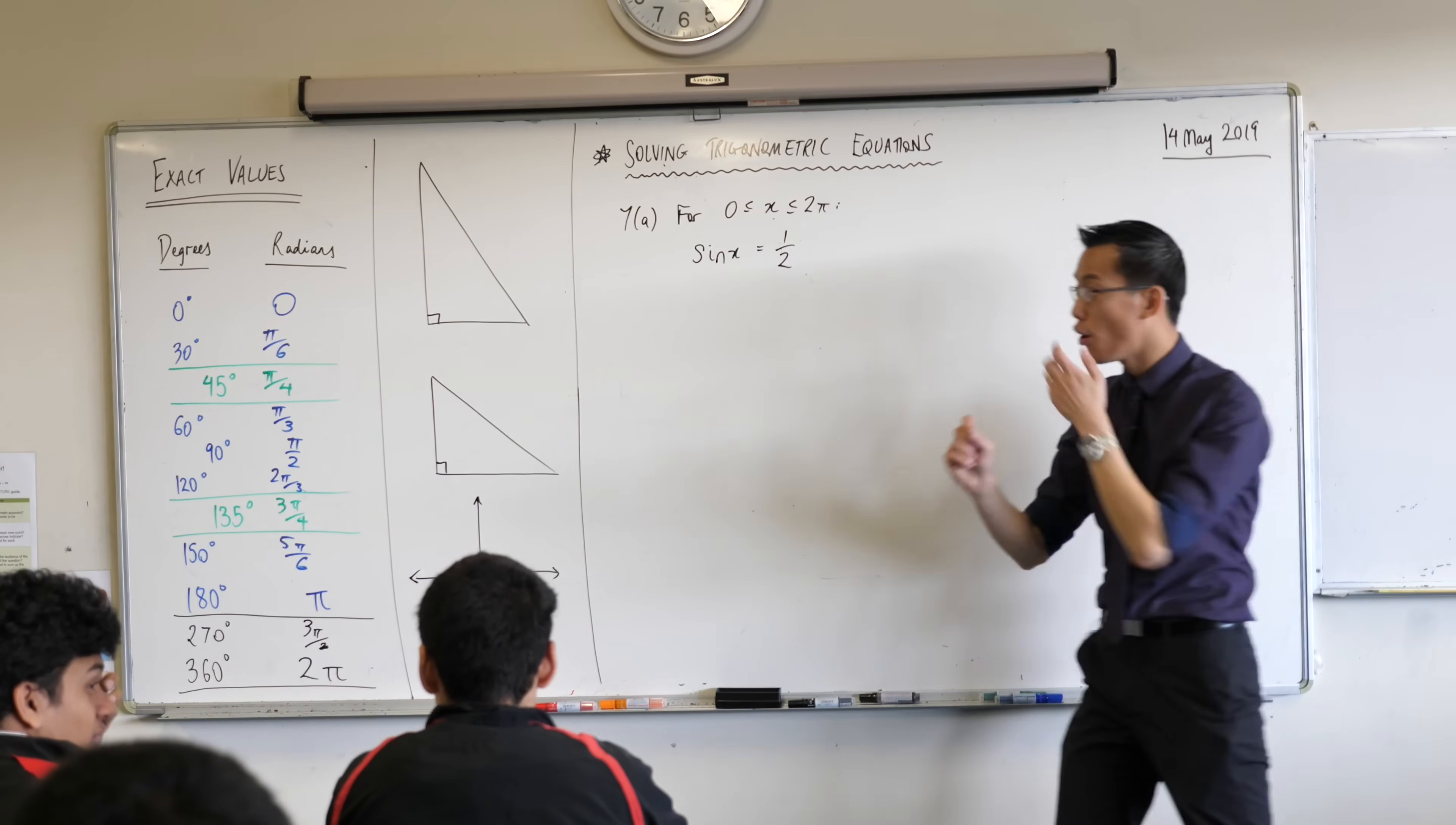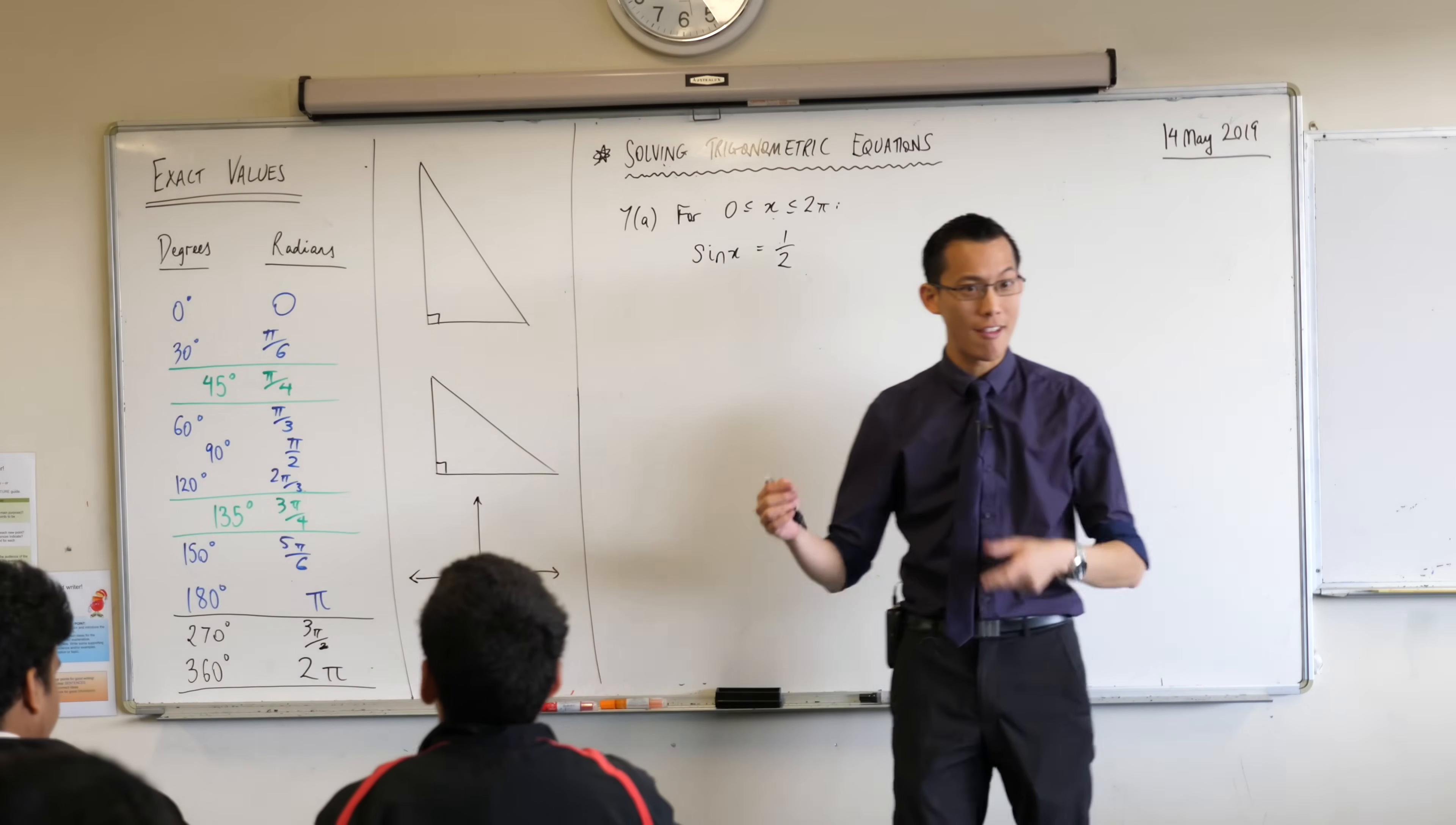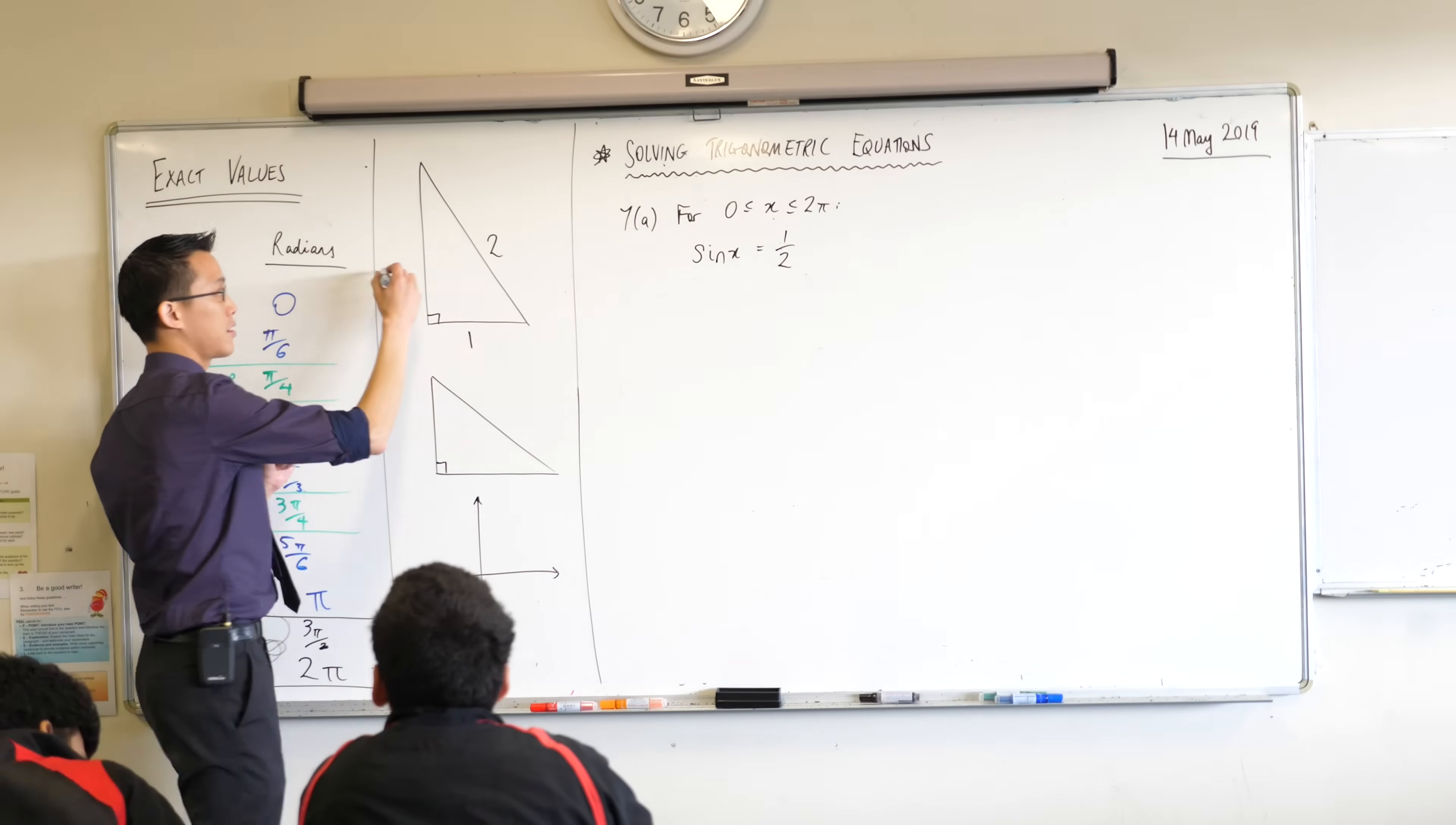Now you might recall when we were learning exact values the first time we drew a pair of triangles, the ones on your reference sheet. Now the ones on the reference sheet are in degrees but we're trying to get ourselves into a new mode. Let's start with this exact right angle triangle, it's got a 1 and a 2 on the hypotenuse. Does anyone remember what the other length is? Very good it's √3.